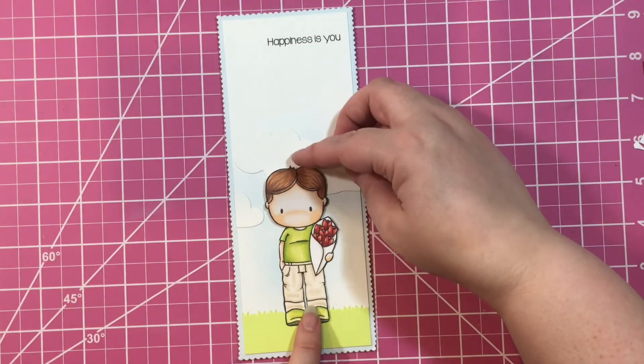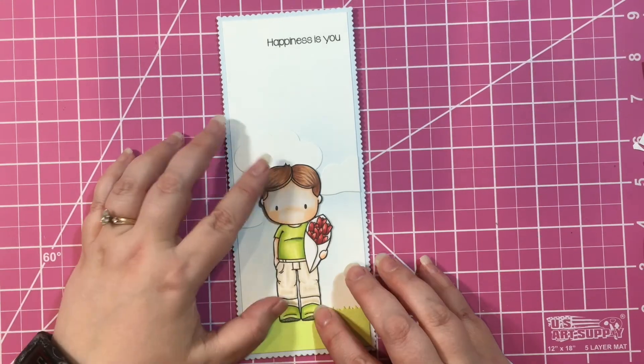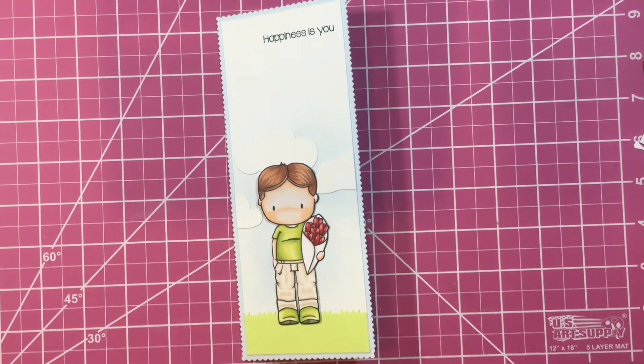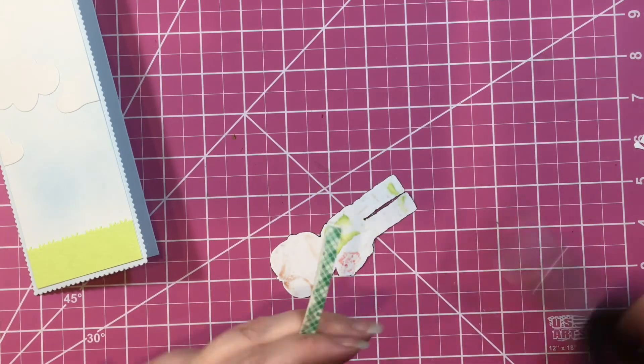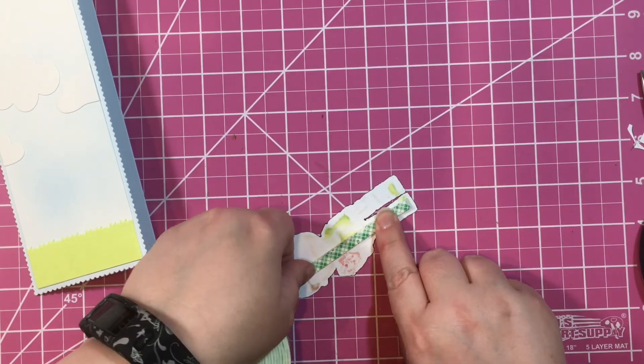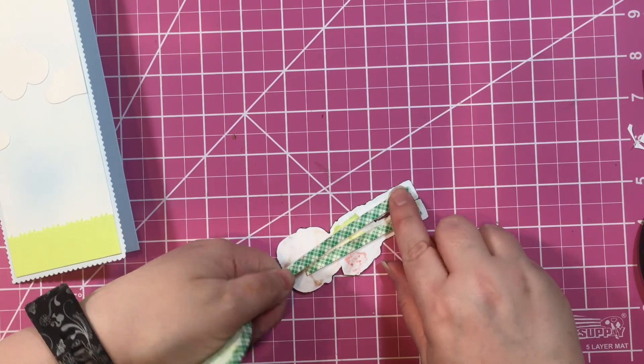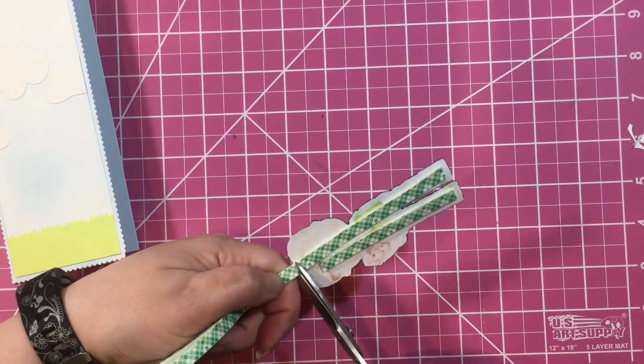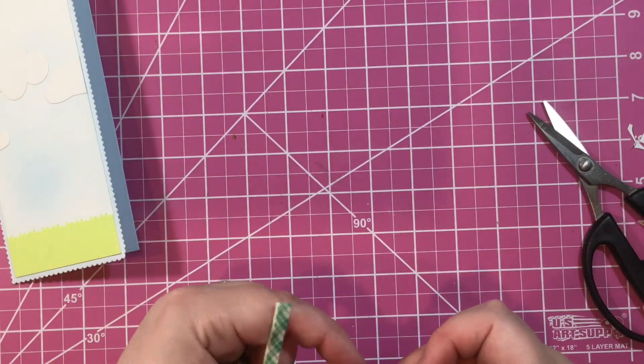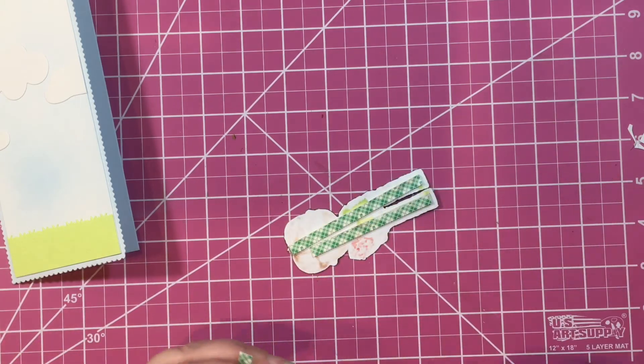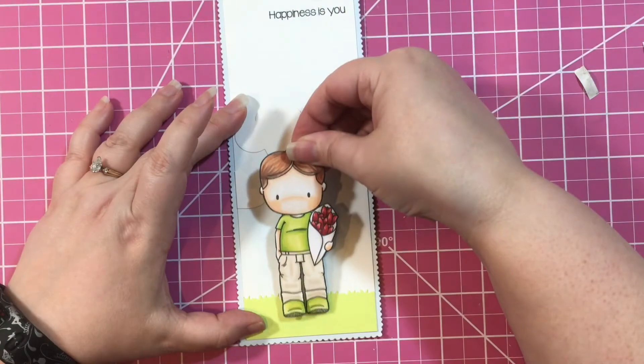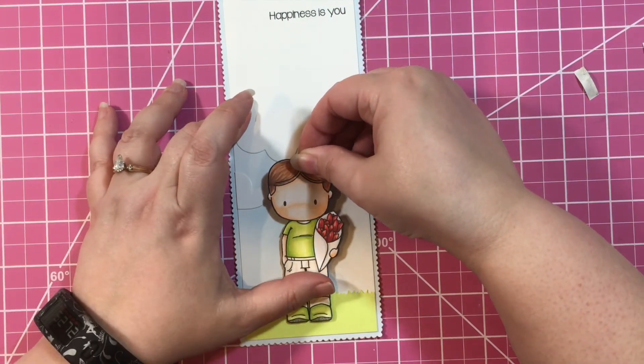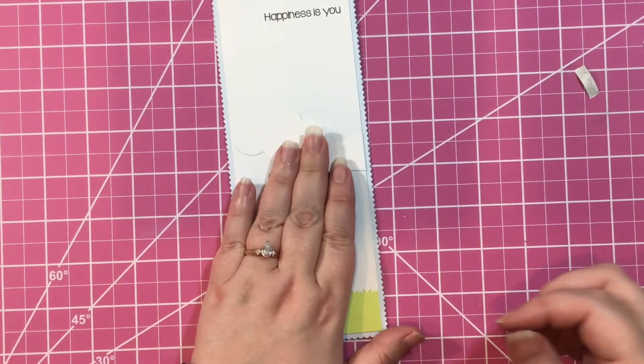I finished him and I'm going to add him to the card. Since my card is pretty one-dimensional, I decided to use some foam tape to pop him up. I add some strips of the foam tape to him, peel off the backing, and attach him to the card. Then my card is finished. Thank you for joining me on day six. Tomorrow's our last day and then the release is on Friday. I hope to see you back here again tomorrow. Bye bye and have a great day.